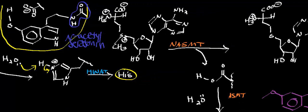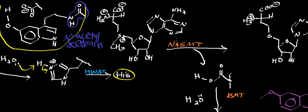Now that we have N-acetylserotonin, we're going to transfer a methyl group onto it, catalyzed by a different enzyme: N-acetylserotonin O-methyltransferase. The 'O' designation indicates we're transferring the methyl group onto the oxygen — specifically, we're substituting the proton on the hydroxyl group at the 5-position of the indole with a methyl group.